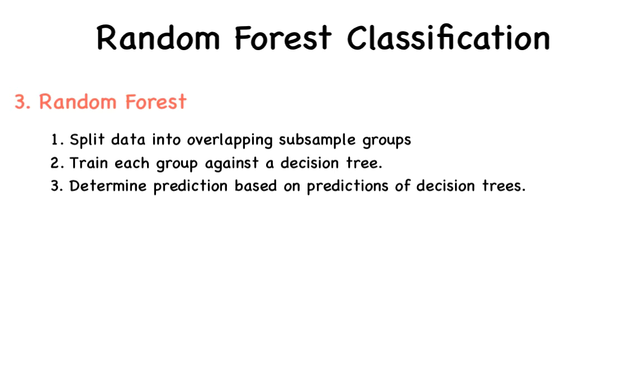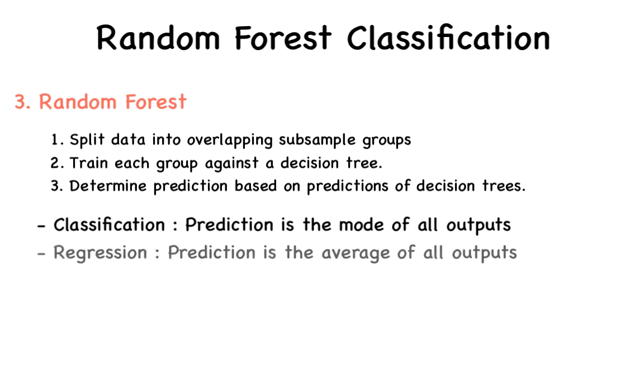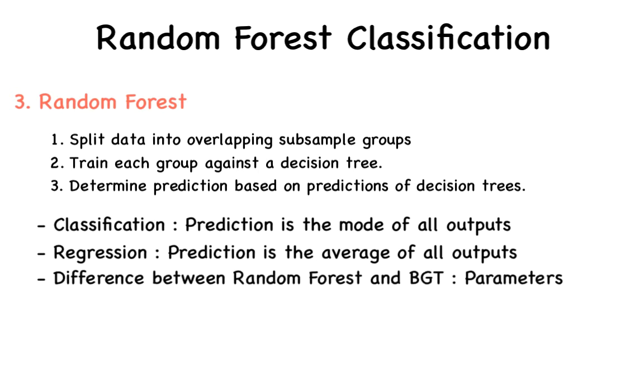Then, during testing, we determine the overall output based on the prediction of all decision trees. Now, in the case of a classification problem, the prediction of the random forest would be the mode of the prediction of the constituent decision trees. In regression, the prediction is the average, once again, very similar to bagging. In fact, random forests are just the improved version of the bagged decision trees. The main difference is the number of parameters required to construct their structures.